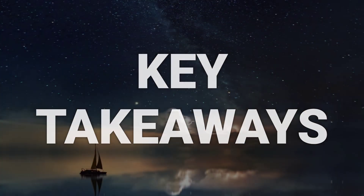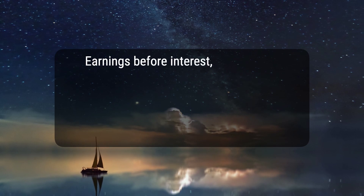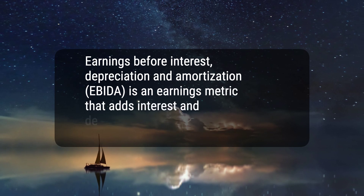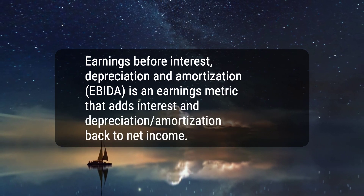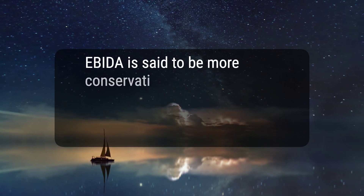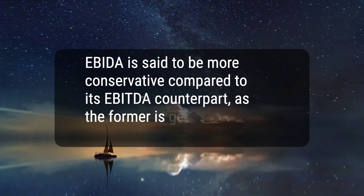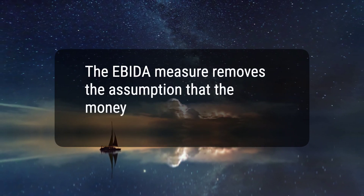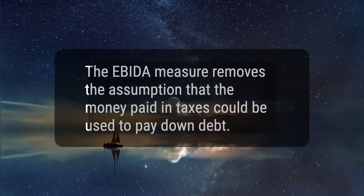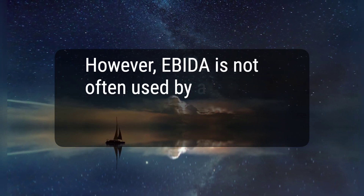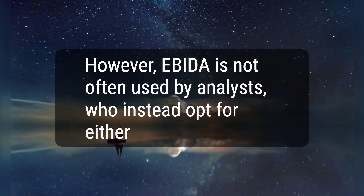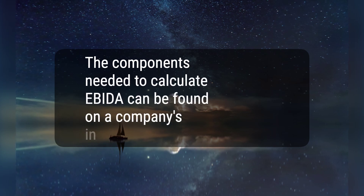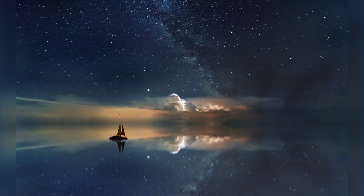Here are five key takeaways. 1. Earnings Before Interest, Depreciation and Amortization (EBIDA) is an earnings metric that adds interest and depreciation/amortization back to net income. 2. EBIDA is said to be more conservative compared to its EBITDA counterpart, as it is generally always lower. 3. The EBIDA measure removes the assumption that the money paid in taxes could be used to pay down debt. 4. However, EBIDA is not often used by analysts, who instead opt for either EBITDA or EBIT. 5. The components needed to calculate EBIDA can be found on a company's income statement. Hope this helps — thanks for watching.